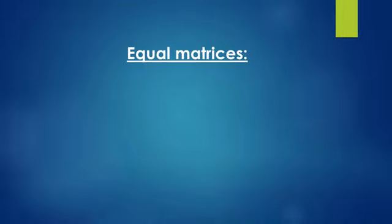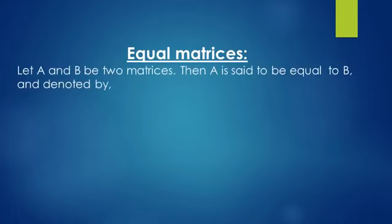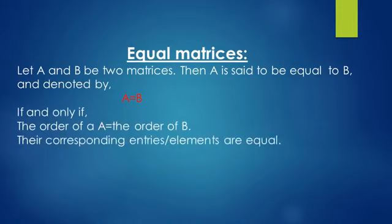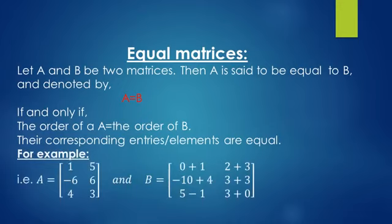Equal matrices: let A and B be two matrices. Then A is said to be equal to B, denoted A = B, if and only if the order of matrix A equals the order of matrix B, and their corresponding entries or elements are equal. For example, matrix A = [1, 5, -6; 6, 4, 3] and matrix B has entries that simplify to [0+1, 2+3, -10+4; 3+3, 5-1, 3+0] = [1, 5, -6; 6, 4, 3]. So we say matrix A equals matrix B.